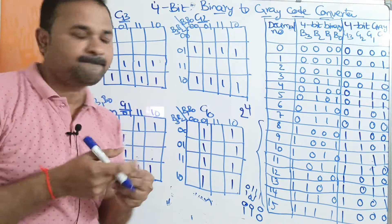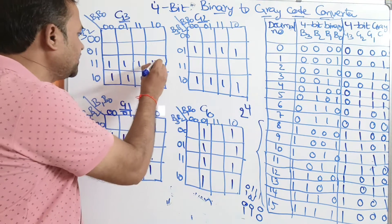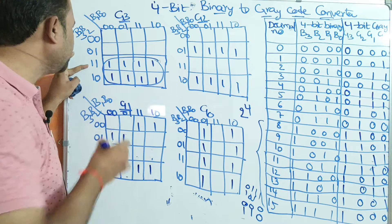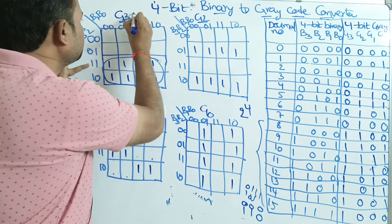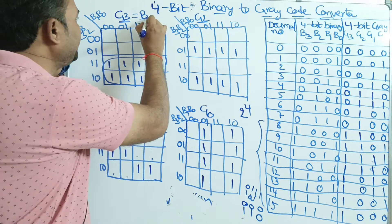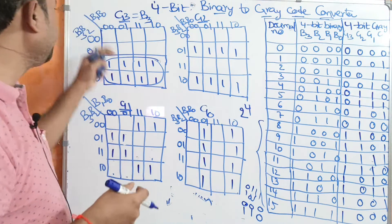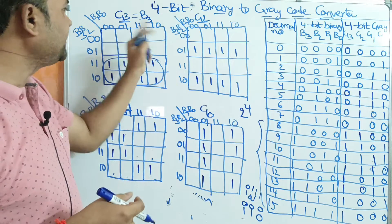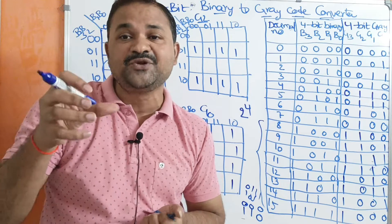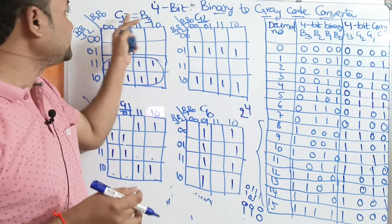Now we do the mapping. We can combine these 8 cells as one group. What is the expression? Observing the group, B3 is the only common variable — B2, B1, and B0 are all changing, so there is no need to consider them. This makes sense because in gray code we keep the first bit as it is. So G3 equals B3.